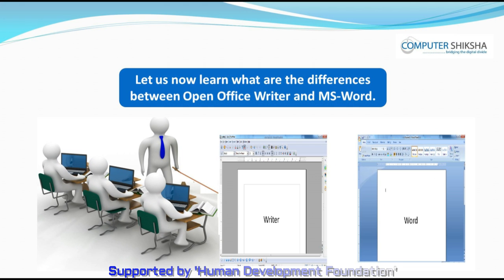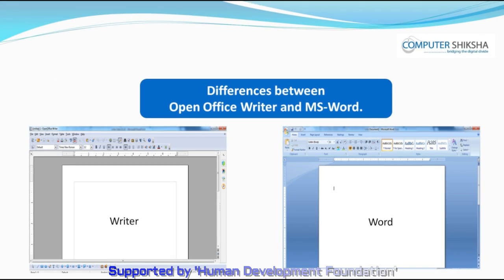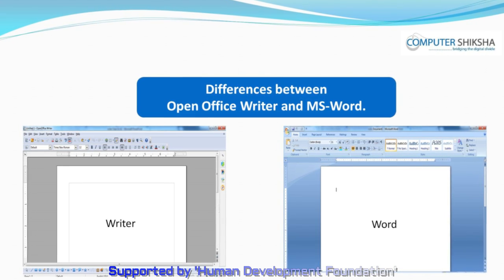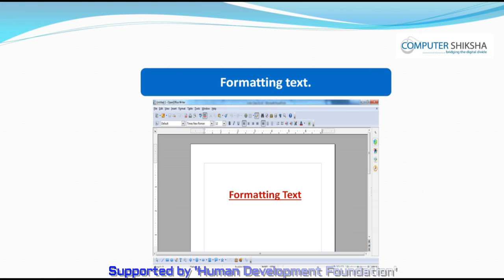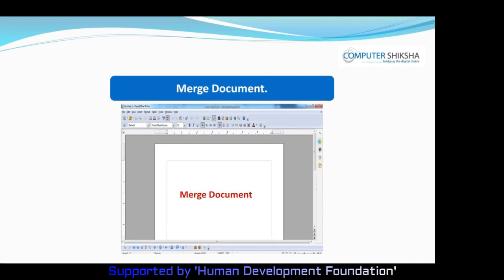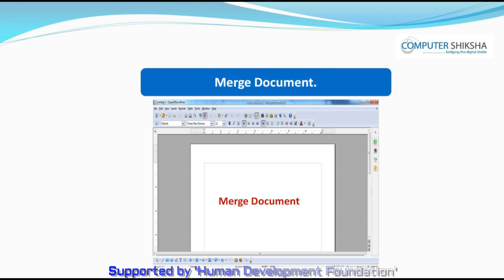Let us now learn what are the differences between Open Office Writer and MS Word. We use MS Word and Open Office Writer for the same work. Just as we use MS Word for making documents, typing text and formatting it, merging text, etc., we use Open Office Writer also for the same tasks.